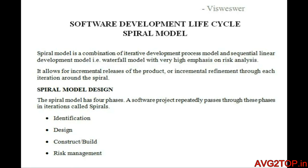The spiral model in software development lifecycle is a combination of an iterative model and a waterfall model, with high emphasis on risk analysis. In this process, it runs through initial steps like a spiral by incremental release of the product, or incremental refinement through each iteration within the spiral.